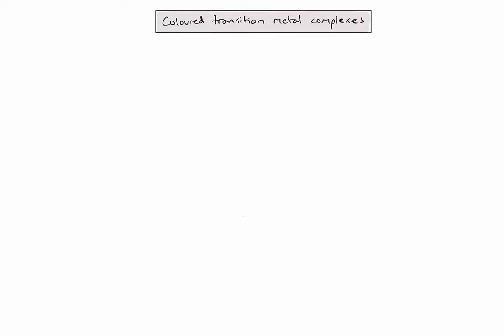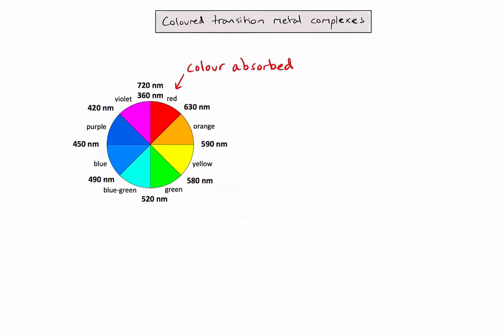In our example of copper 2-plus ions forming complex ions with water ligands, we find that the electron transition absorbs red light in the visible part of the spectrum. If that process absorbs red light, the color we see in the solution will be the complementary color to red. The complementary color is just simply the color on the opposite side of the color wheel. So in this case, the blue-green color.